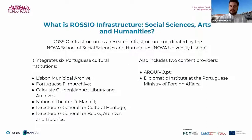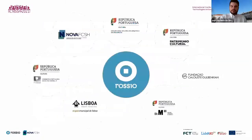ROSSIO is the research infrastructure coordinated by the Nova School of Social Sciences and Humanities. It integrates six Portuguese cultural institutions: the Lisbon Municipal Archive, the Portuguese Film Archive, the Calouste Gulbenkian Art Library and Archives, the National Theater Donna Maria II, the Directorate General for Cultural Heritage, and the Directorate General for Books, Archives and Libraries. ROSSIO also includes content providers such as the Portuguese Web Archive and the Diplomatic Institute at the Portuguese Ministry of Foreign Affairs.